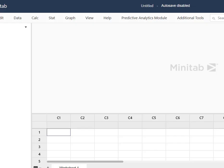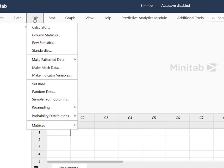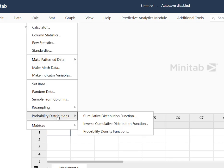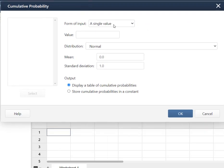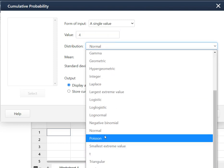So here I am in Minitab and I'm going to go to the calc menu and for probability distribution remember I need the CDF cumulative function because I want it to add up the probabilities for me. And so I'm going to put in a single value. Now the key here is the value is going to be four because I want four included. I want four or fewer and my distribution is a Poisson.